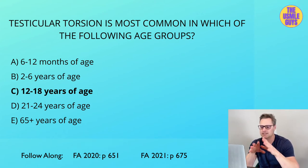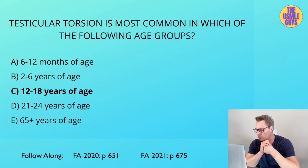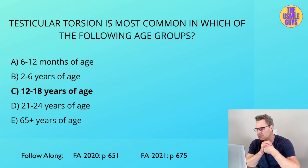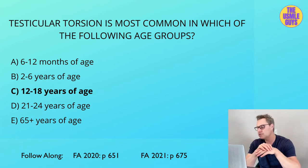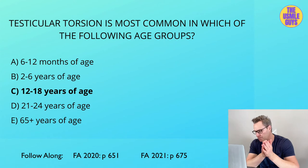Let's discuss the varicocele. This is very common and therefore highly tested — in fact, this is the most common cause of scrotal enlargement in males. As a result of an increase in venous pressure, there will be dilated veins in the pampiniform plexus. The way this usually presents in the clinic is with someone coming in because they feel a bunch of thick, string-like structures in the scrotum. The typical buzzword is 'bag of worms,' but don't expect them to just state that on exam day — always look for the description.